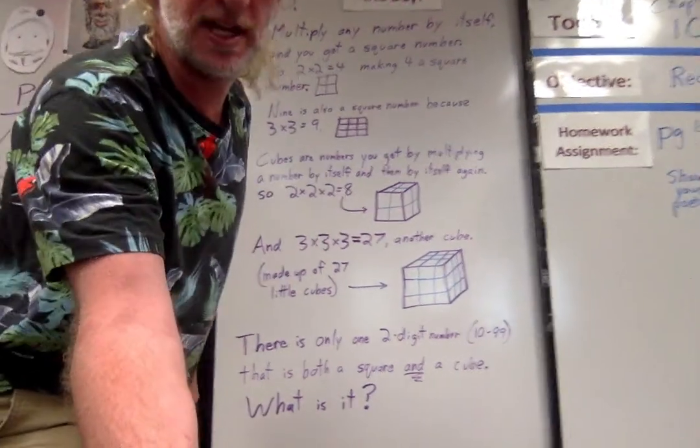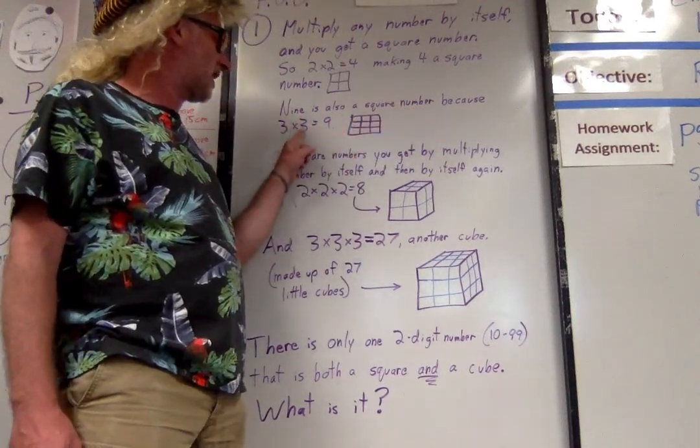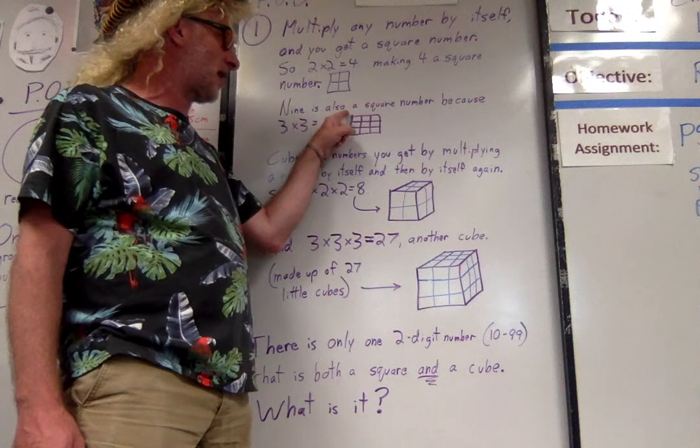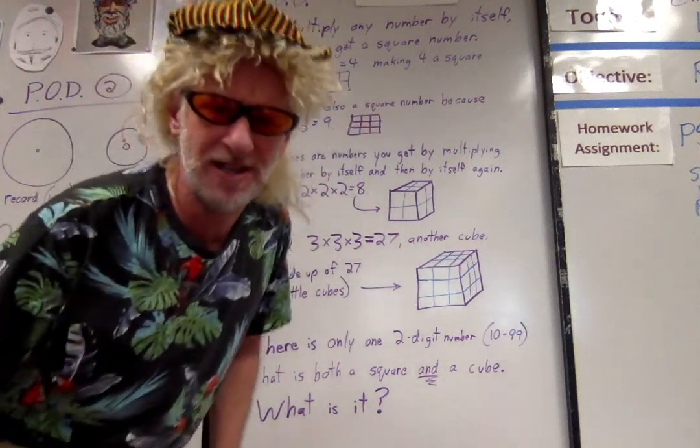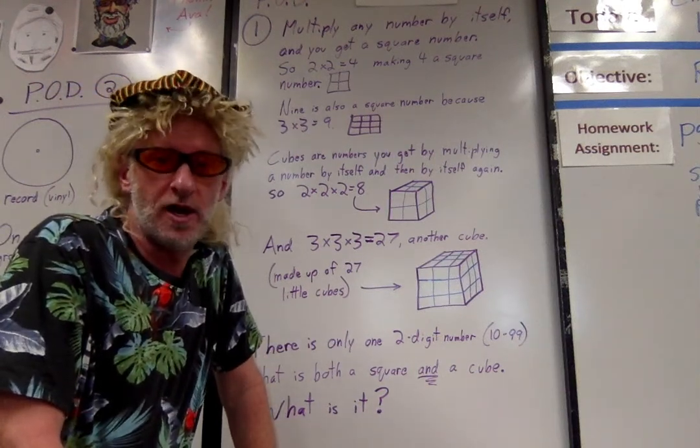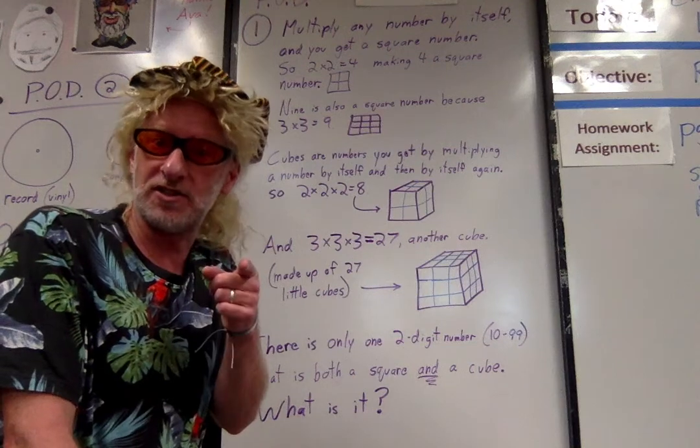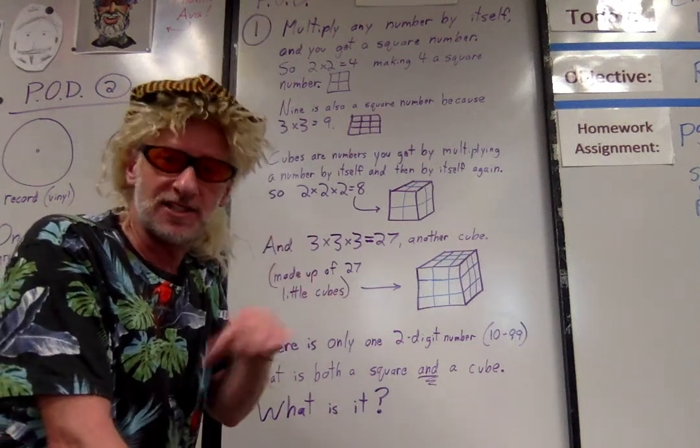Come on in a little closer, let's take a look. Nine is also a square number because 3 times 3 is 9. I can make a square, 3 by 3. Does that mean 10 is a square number? No, you can't multiply any number by itself to get 10 or 11 or 12 or 13, 14, 15. What about 16? Oh, 4 by 4 makes 16. 16 is a square number.